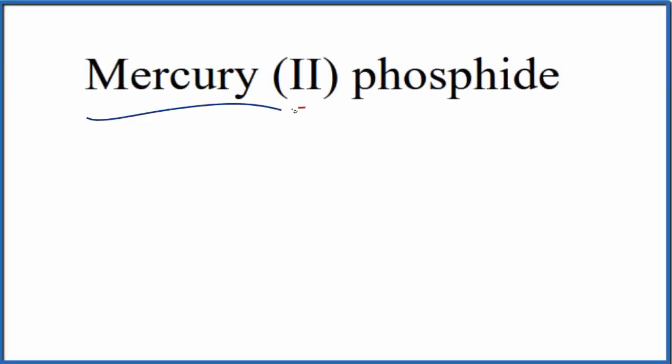To write the formula for mercury (II) phosphide, we first note the Roman numeral 2 in parentheses. That means mercury is a transition metal. We write the element symbol Hg for mercury, and the 2 tells us we'll have a 2+ charge.